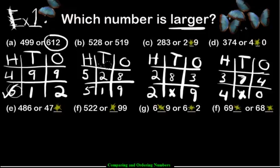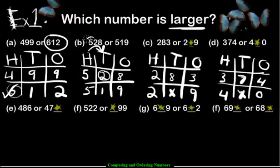Here's the next one. We have 500s and 500s — the number with the most hundreds is the bigger number, but it's a tie. So what do we do? We jump to the tens. The number with the most tens is the winner, and this one has more tens than this one. So 528 is the bigger number — there's no need to check the ones.